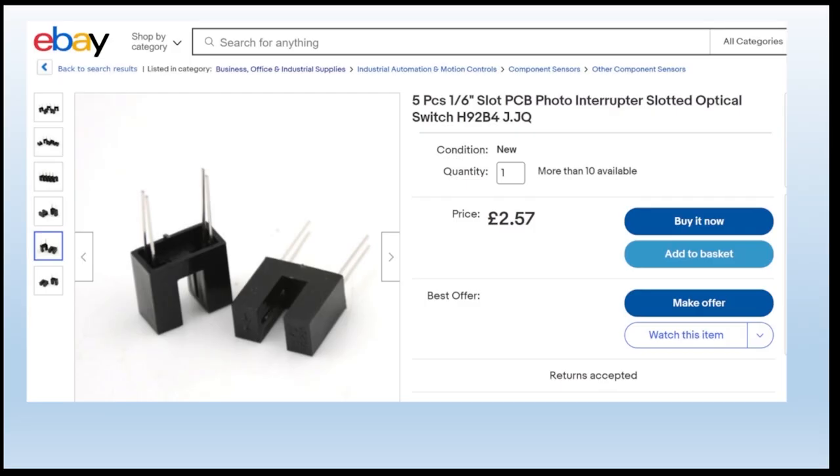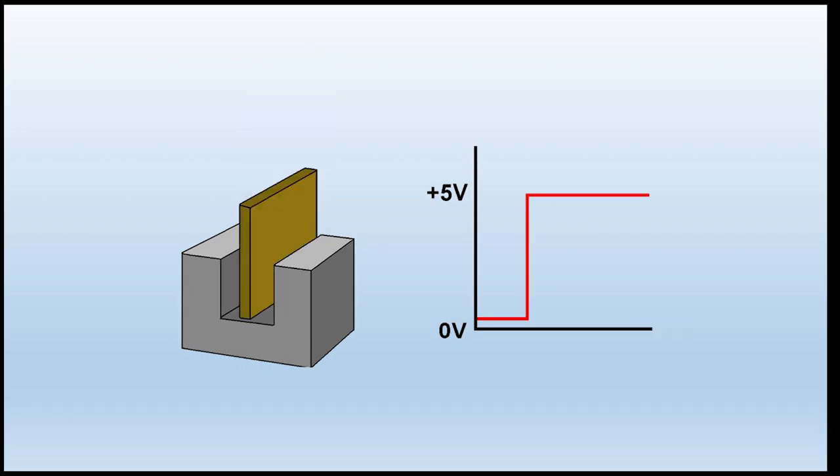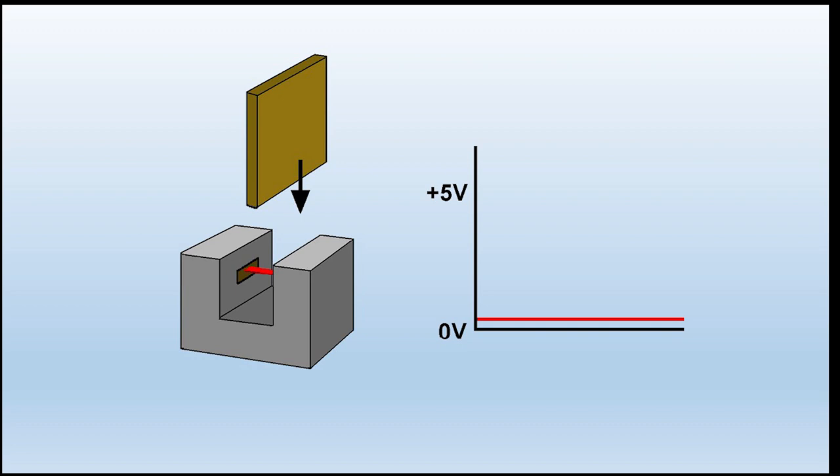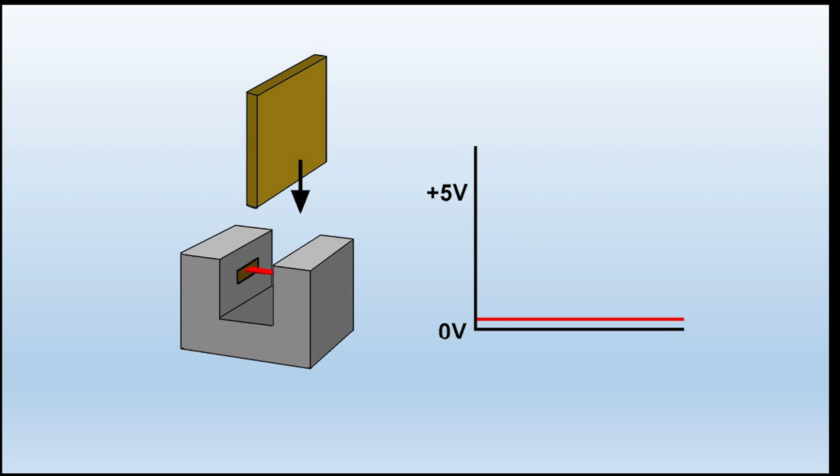They come in different sizes. That's a typical set, four pin again. And that's what they look like. You have the gap between them. The light goes across the gap between the LED source and the photo transistor. So normally there is no output, but if you break the beam the output switches on. Beam, zero. Break the beam, five volts. Zero, five. Just by breaking the beam.